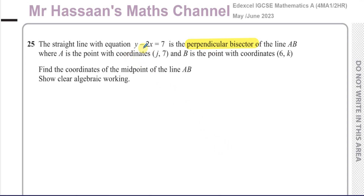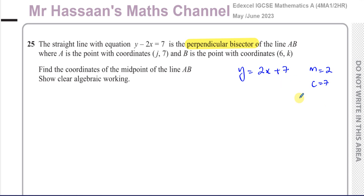So we have the line Y minus 2X equals 7, which I'm going to rewrite as Y equals 2X plus 7, just rearranging it. From here we can see the gradient of this line is going to be 2 and the Y-intercept is going to be 7. We can also see that it's going to cross the X-axis when Y equals 0, which will be minus 7 over 2 — so minus 3.5 is where it crosses the X-axis.